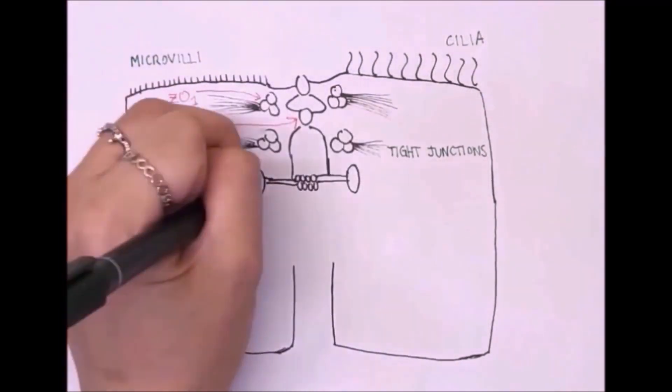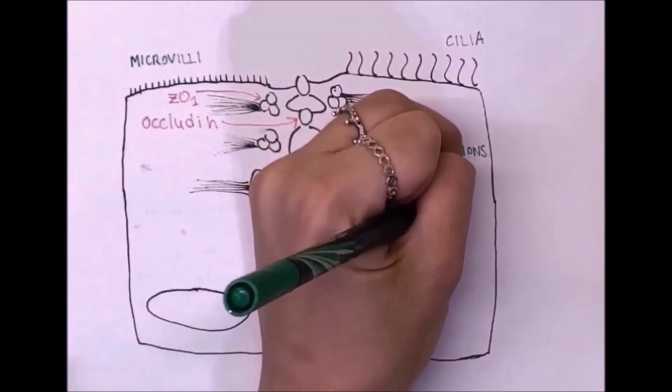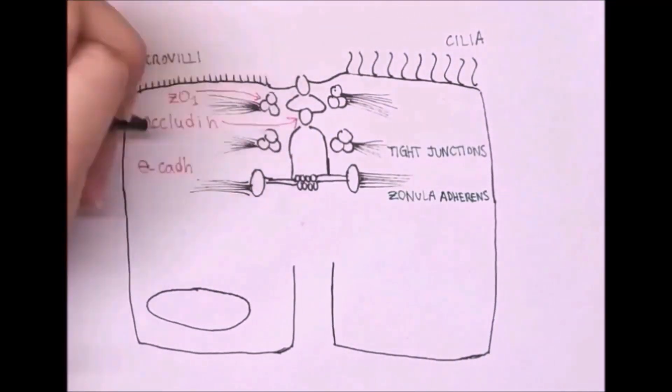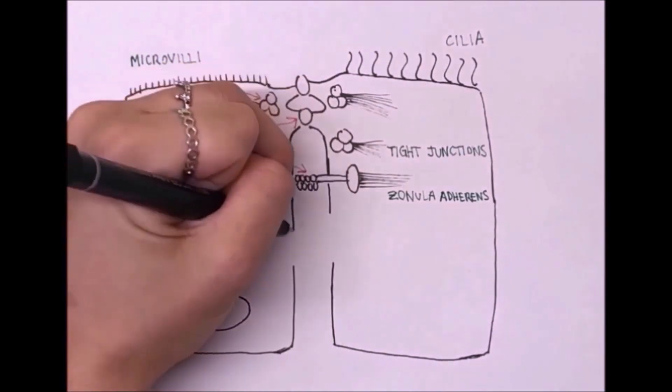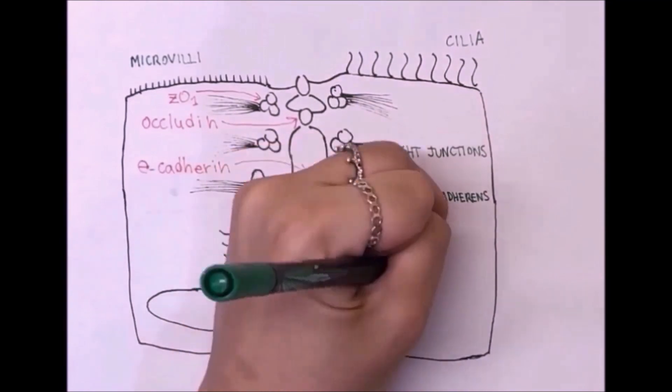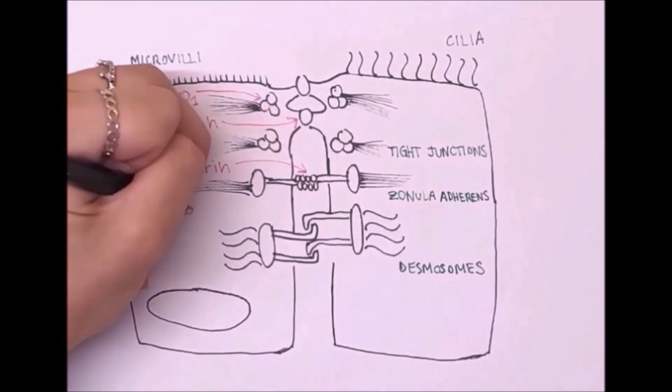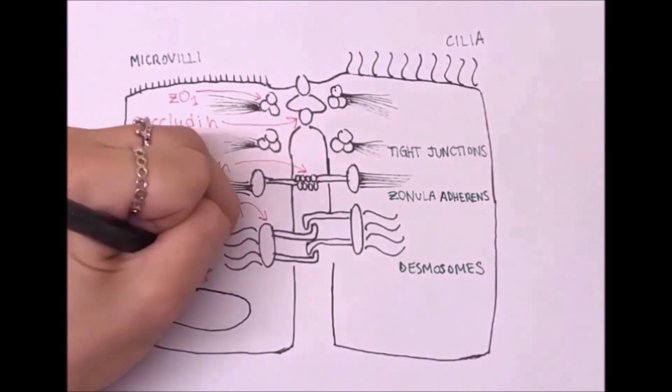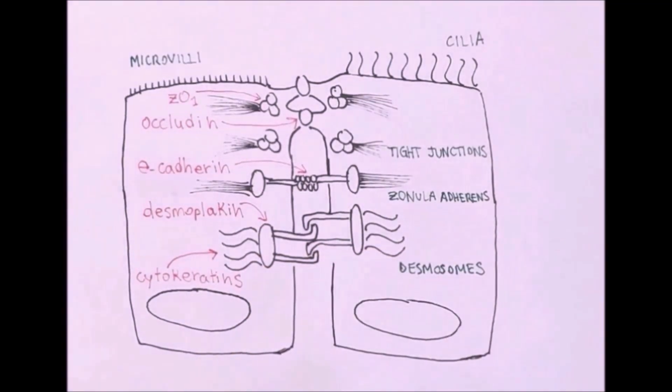Concerning the junctions, the ones that confer the most stability are tight junctions. Their markers are ZO-1 and Occludin. Zonula adherens and desmosomes also contribute with other markers, such as E-cadherin, Desmoplakin, and Cytokeratins.